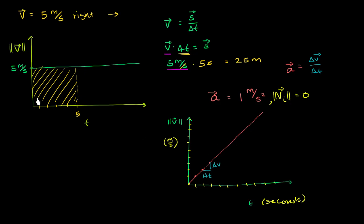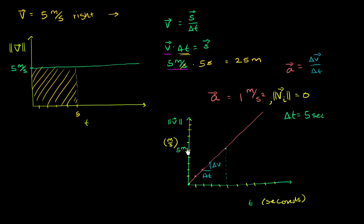Now I want to think about a situation where we accelerate at 1 meter per second squared and we do it for a change in time of 5 seconds. How far have we traveled? We start with an initial velocity of 0, and then for 5 seconds we accelerate at 1 meter per second squared — 1, 2, 3, 4, 5. So after 5 seconds, we know our velocity is now 5 meters per second. But how far have we traveled?